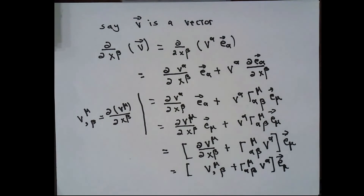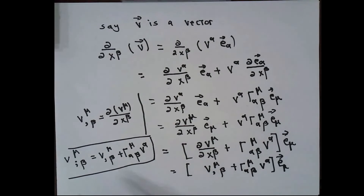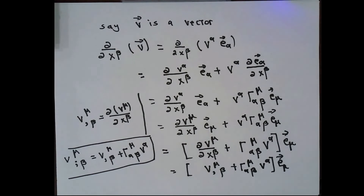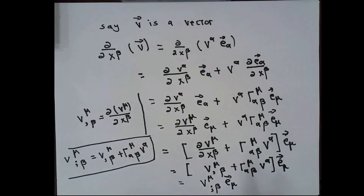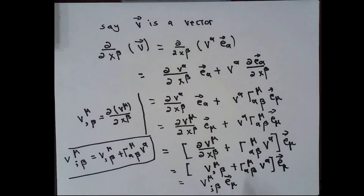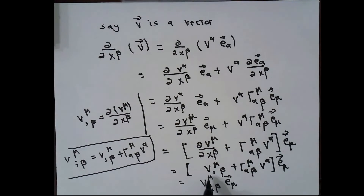A very common abbreviation is to write comma beta to represent taking the partial derivative with respect to x number beta. Using that notation, our result becomes this expression. These are quantities that depend on location — the components of v at various locations and the rates of change of the components of v. We're going to introduce a new notation: v mu semicolon beta, the quantity inside the brackets, called the components of the covariant derivative of v. This takes rate of changes into account, allowing for both the components and the basis vectors to change.